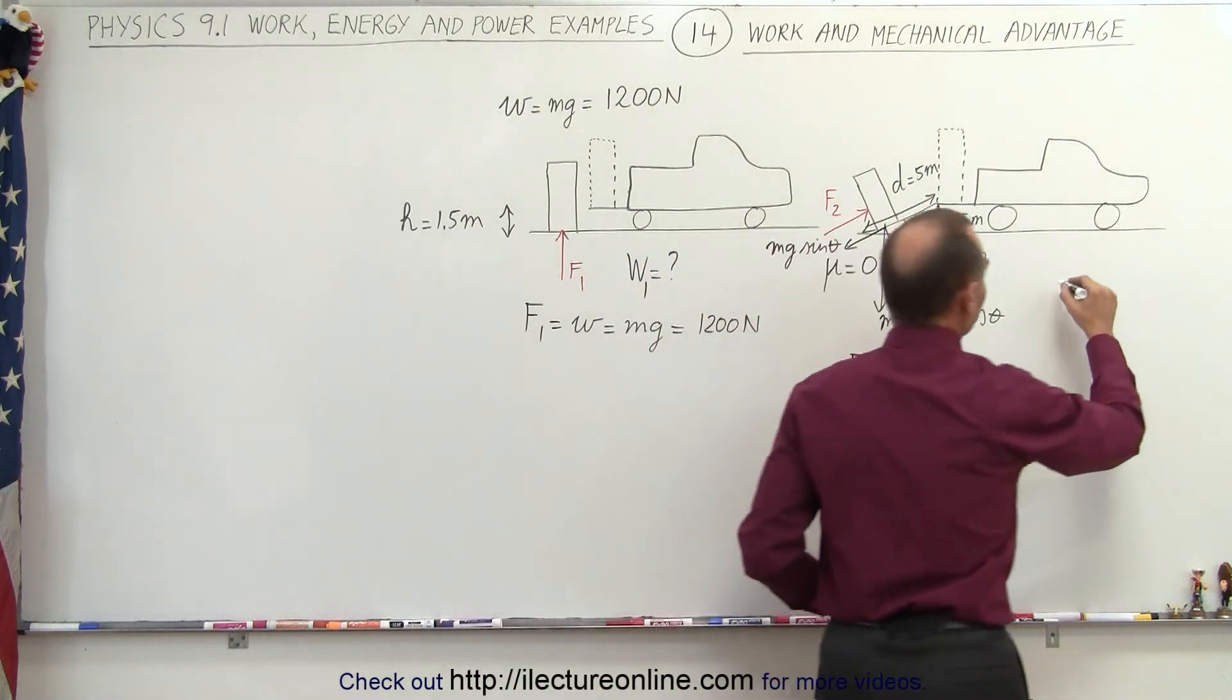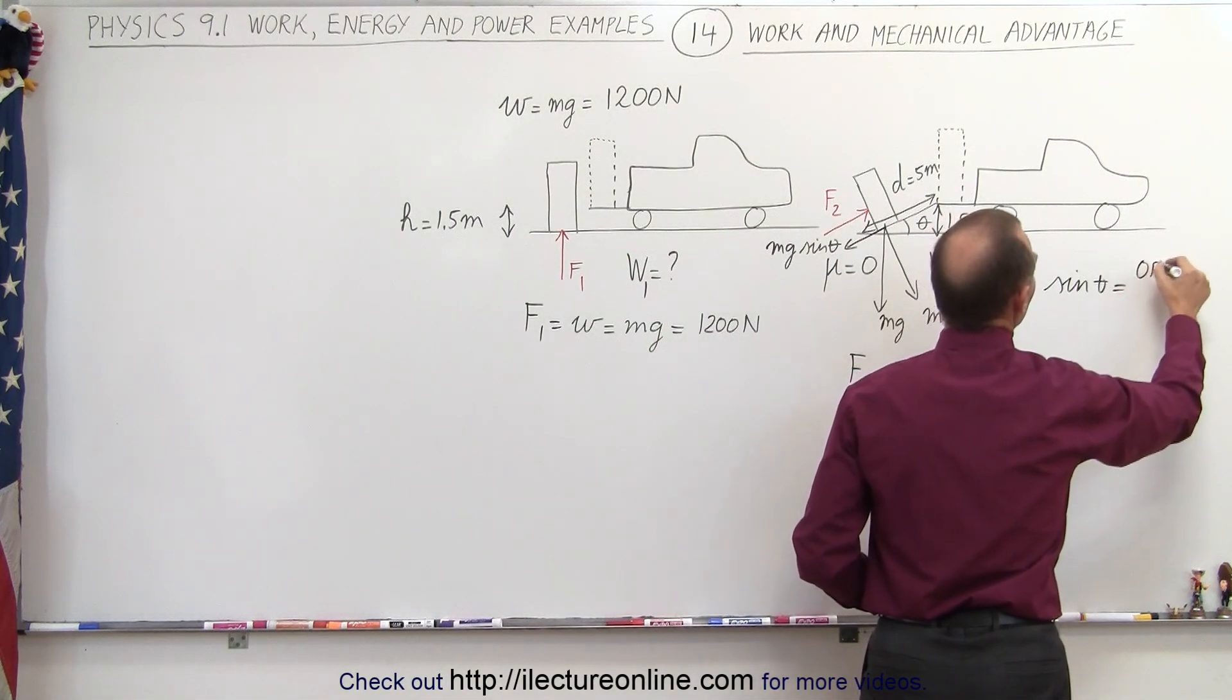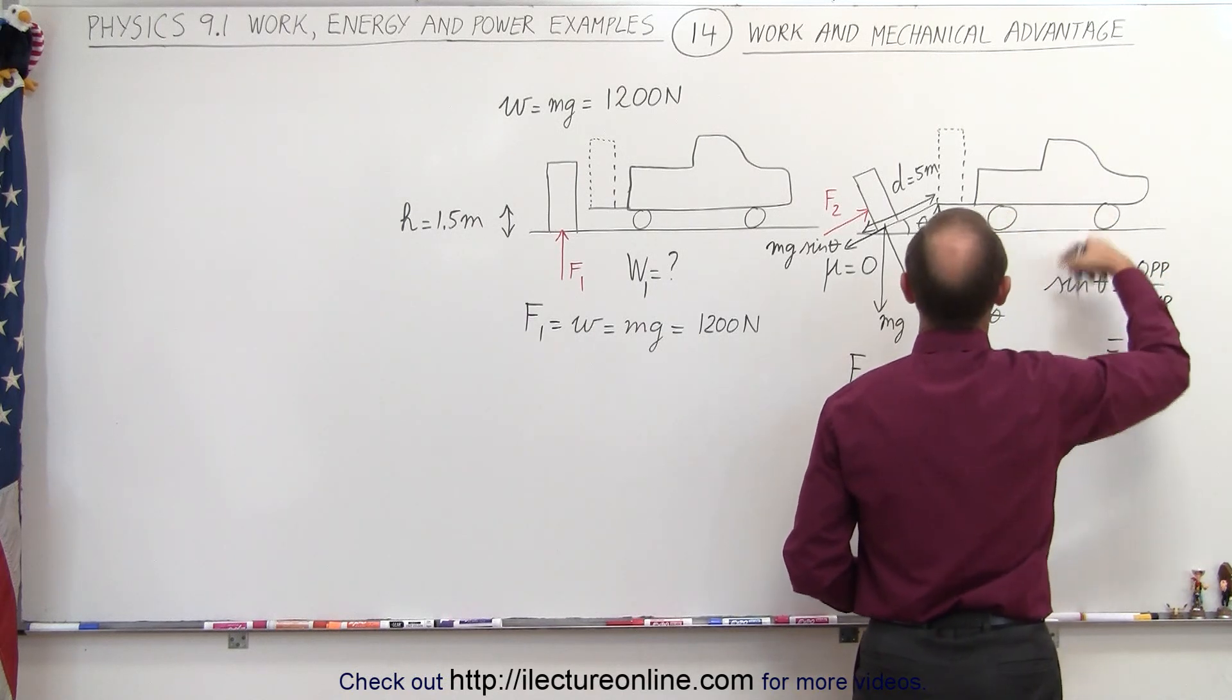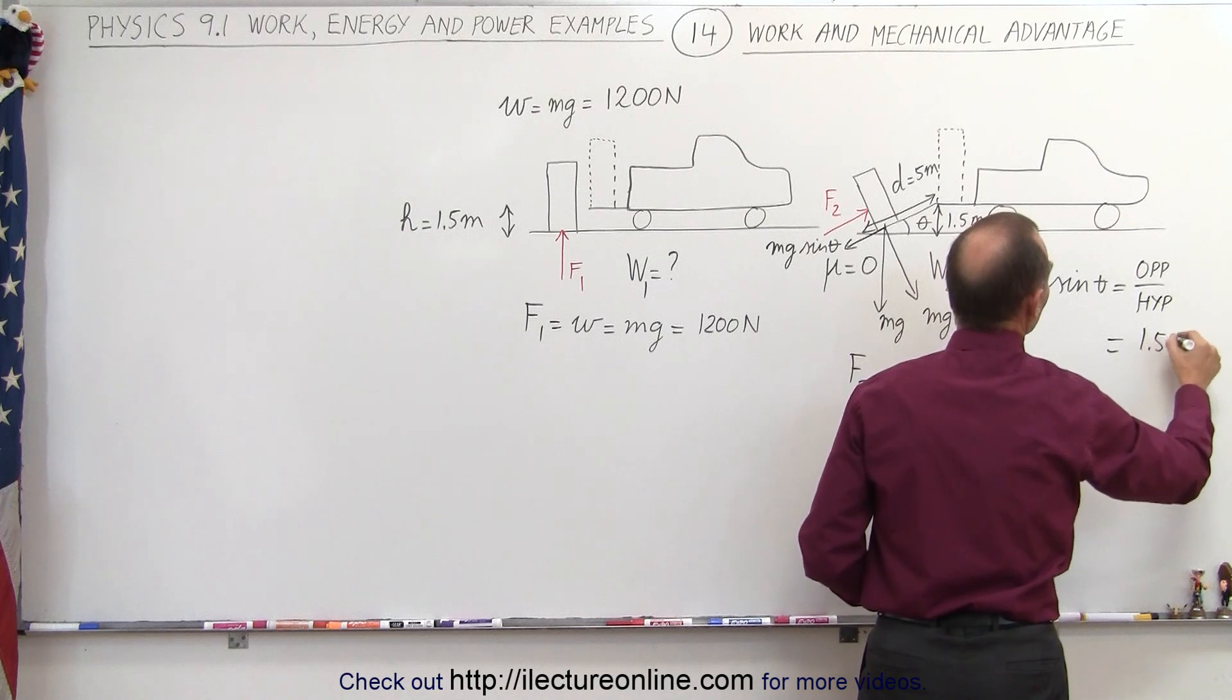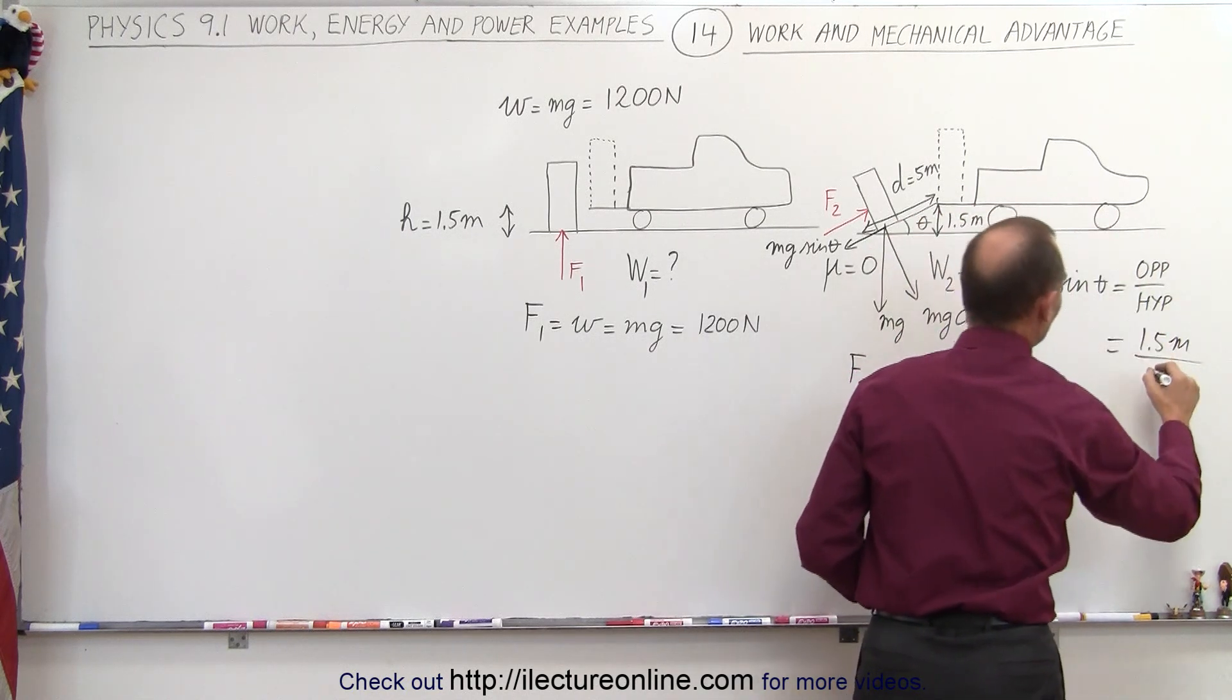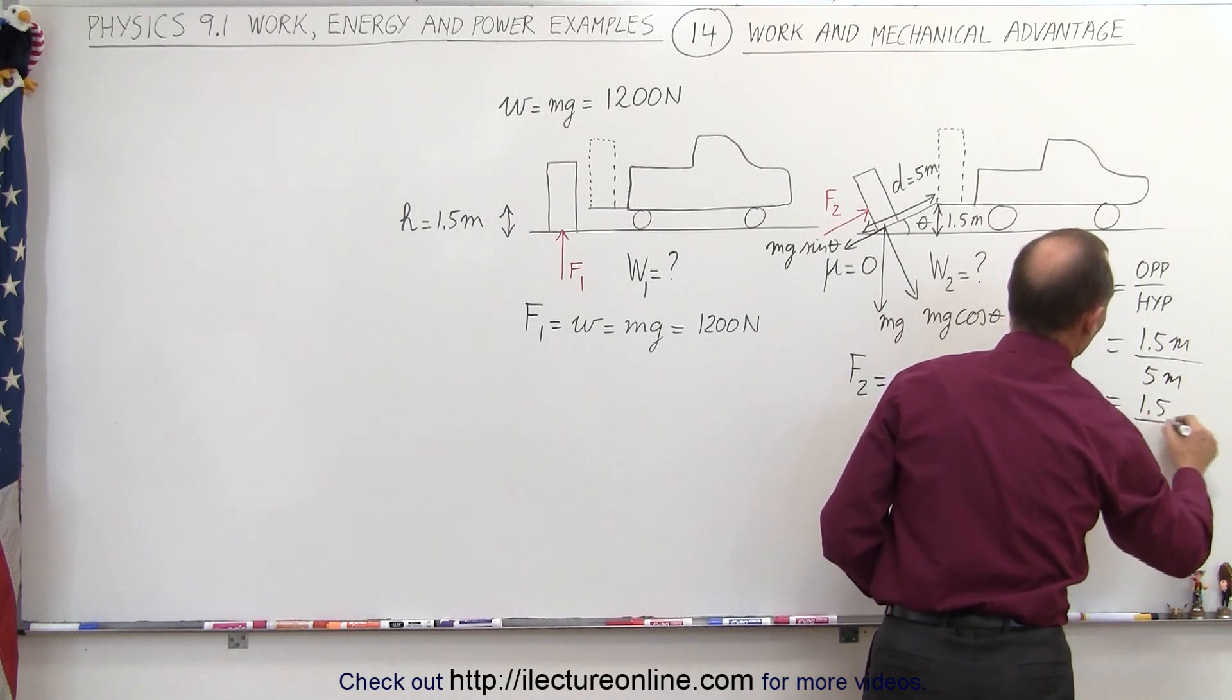Well by definition the sine of theta is the ratio of the opposite side divided by the hypotenuse, and in this case the opposite side would be the height which is 1.5 meters, and the hypotenuse is the ramp which is 5 meters, so you can see that this is equal to 1.5 divided by 5.